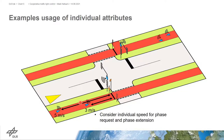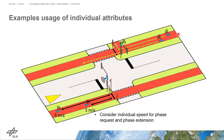Another example is using route information for the phase request. The route information of every cyclist can be stored in the navigation. When cyclists approach the intersection, the control only uses information from cyclists with a route through the intersection. For instance, if a second cyclist turns right in front of the intersection, they no longer need to be considered for the traffic light control, so the mobile device of that cyclist does not send a phase request for the signal at the intersection.